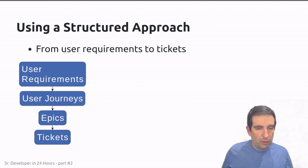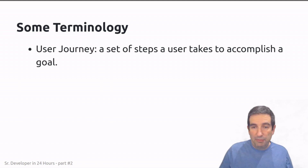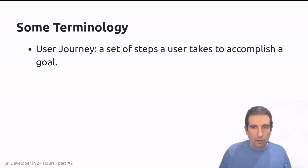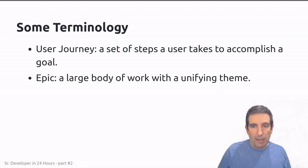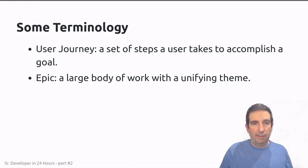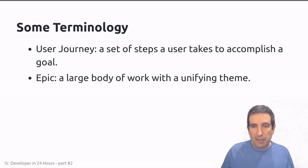Let's talk about some terminology we'll use throughout this presentation. A user journey is a set of steps that a user takes to accomplish a goal. An epic is a large body of work with a unifying theme — normally a collection of tickets, whether a handful or a very large number, and it's basically a way to group tickets together.